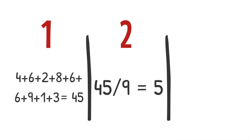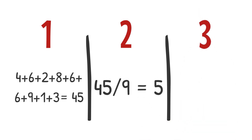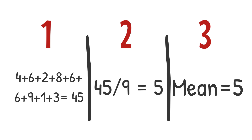So for our dataset, the total is equal to 45 and the number of observations is equal to 9, and hence the mean or the average of this dataset is equal to 5.